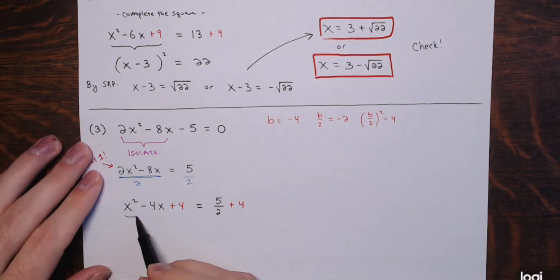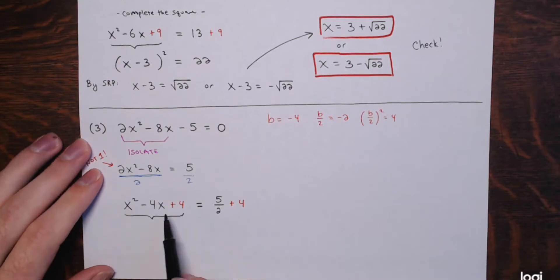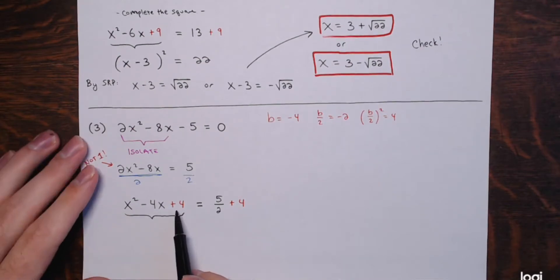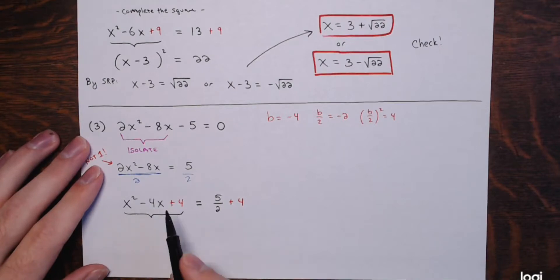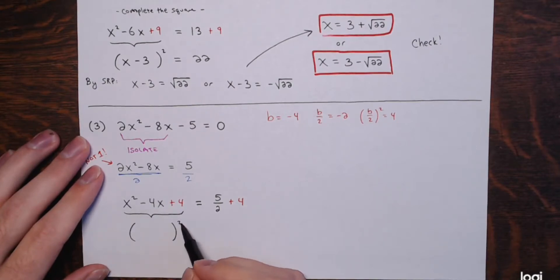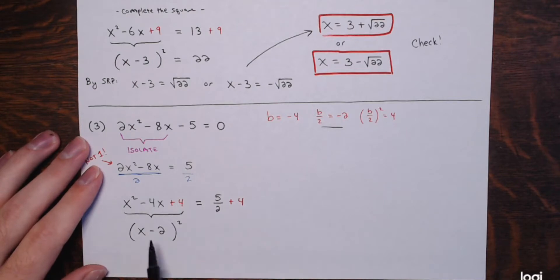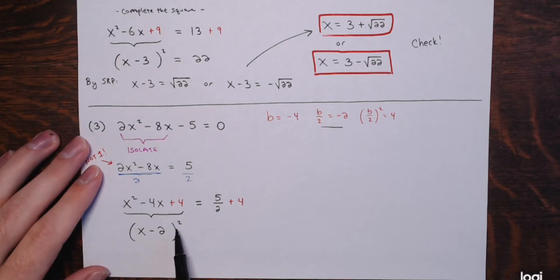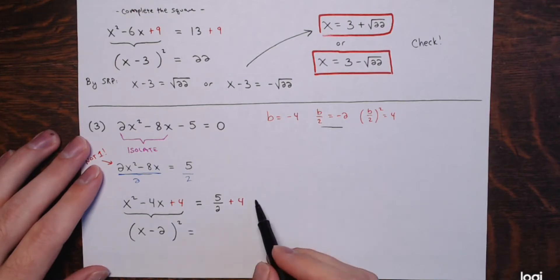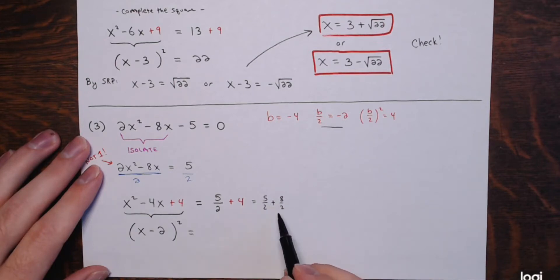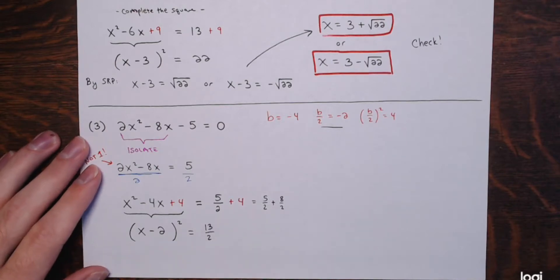The left side x² - 4x + 4 becomes (x - 2)². On the right: 5/2 + 4 = 5/2 + 8/2 = 13/2. So (x - 2)² = 13/2. Applying the SRP: x - 2 = ±√(13/2).